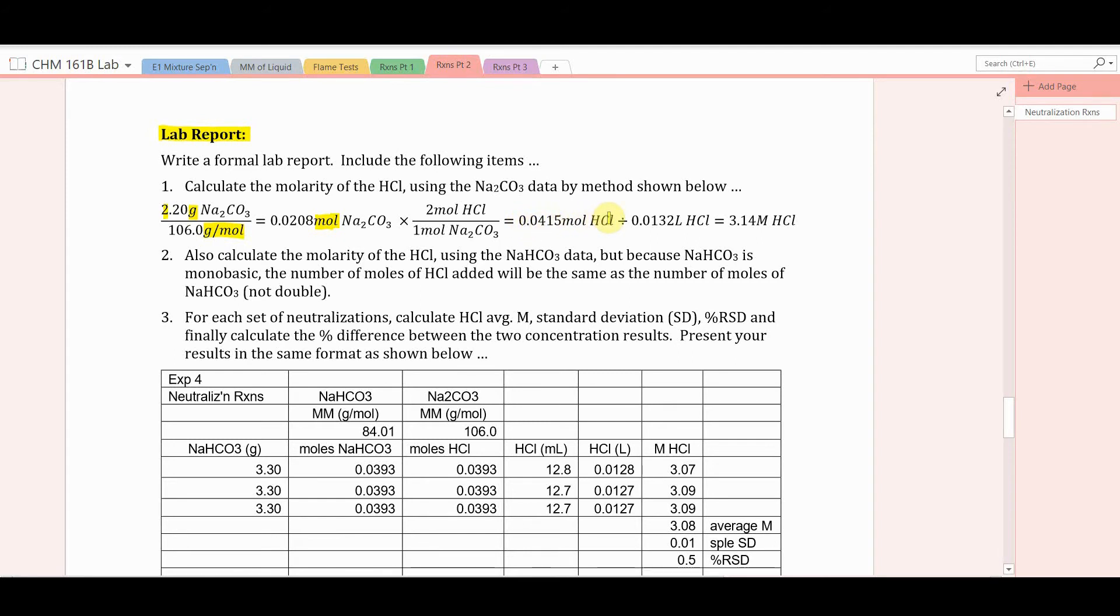We want to calculate the molarity, which is moles per liter. So divide the number of moles of HCl by the volume of the HCl that you added to reach the neutralization point. But do it in liters, not milliliters. So 13.2 milliliters would have been the amount added. That's 0.0132 liters. Moles divided by liters is moles per liter, and that's molarity. 3.14 moles per liter in this case.